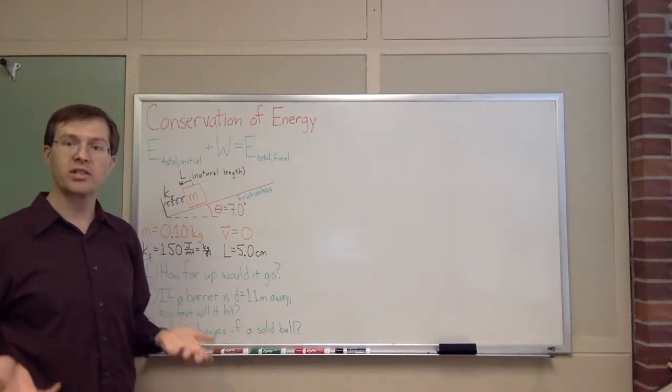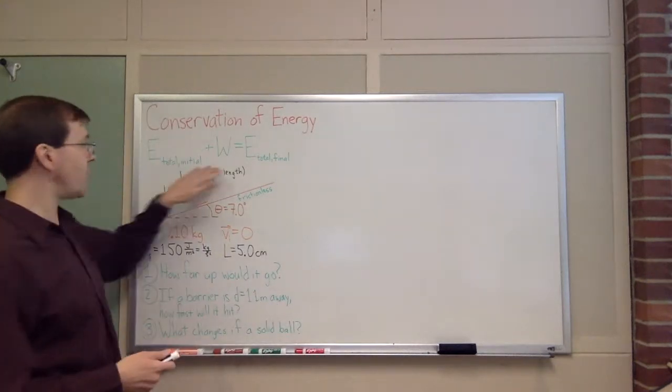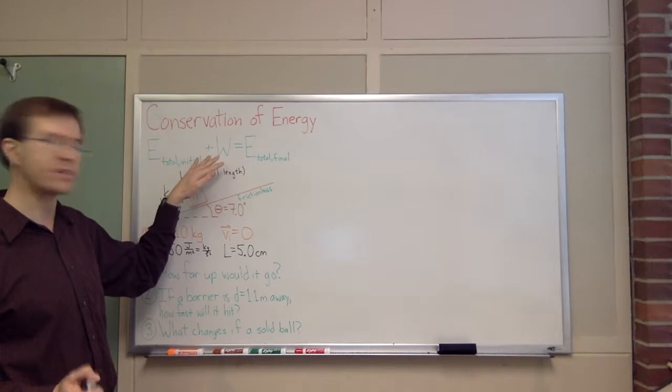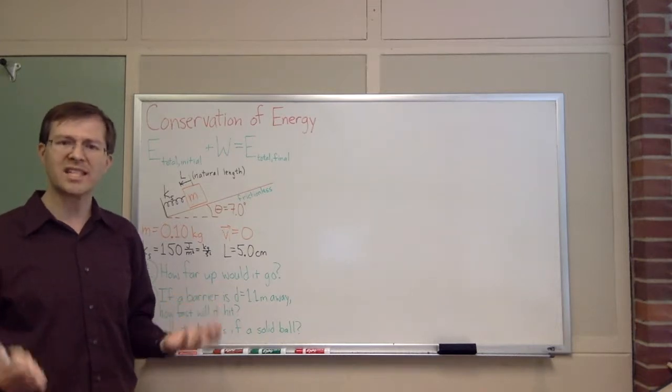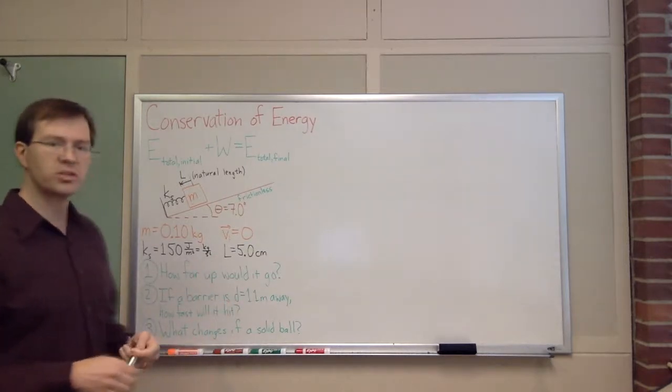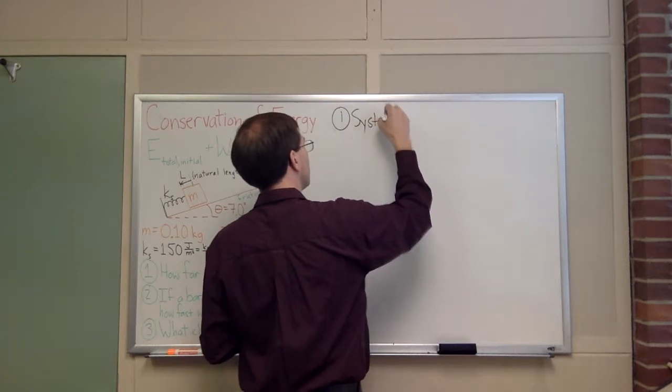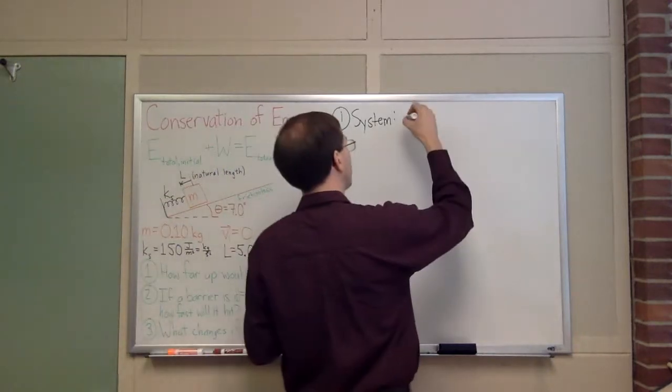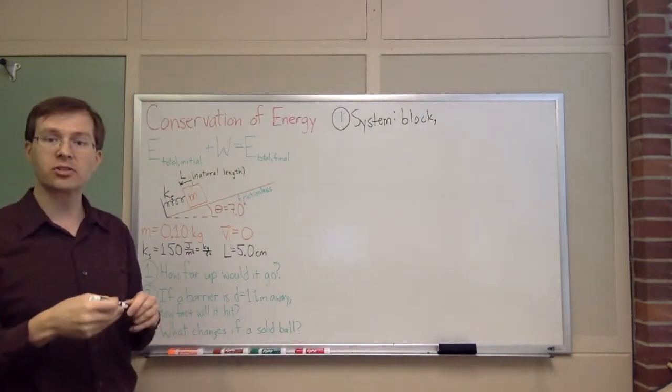I want to analyze that using conservation of energy. To talk about conservation of energy, I'm going to use this general conservation of energy equation. The total initial energy plus work will equal the total final energy. To make this work, the first step we have to do is say, what system are we considering? Step one is to choose our system. Obviously the block is going to be part of our system, because that's an important part of the story. The block is the motion we want to keep track of.